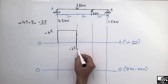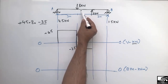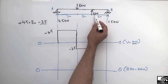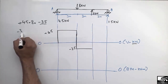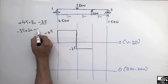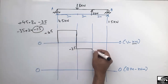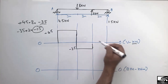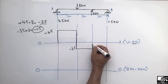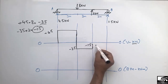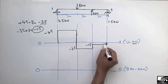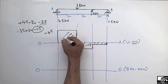There is no load between the two concentrated loads, so we draw a straight horizontal line at minus 3.5. Then the 2 kN load is acting upward (positive), so minus 3.5 plus 2 gives minus 1.5 kN — still below the zero-zero reference line. Again no load, so a straight line, and then the 1.5 kN reaction at B closes the diagram back to zero. This completes the shear force diagram.